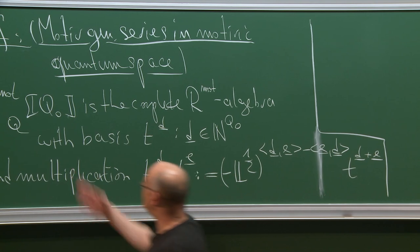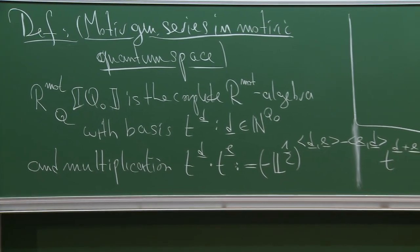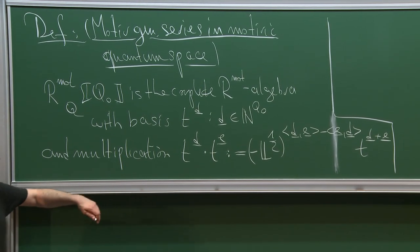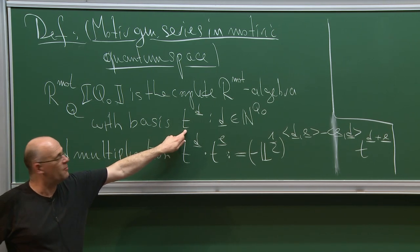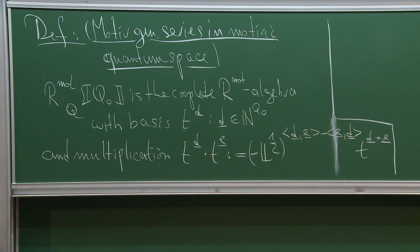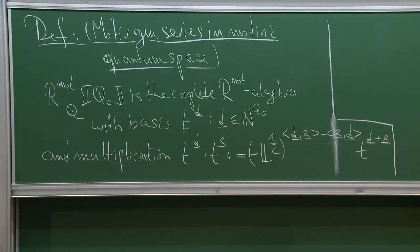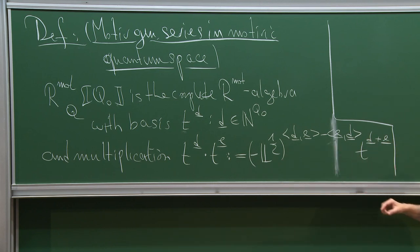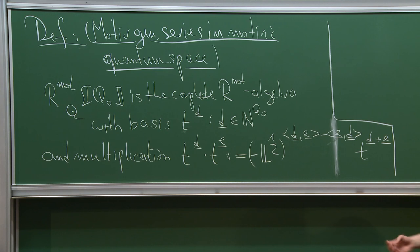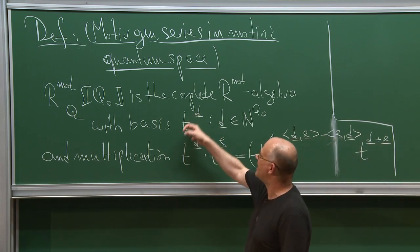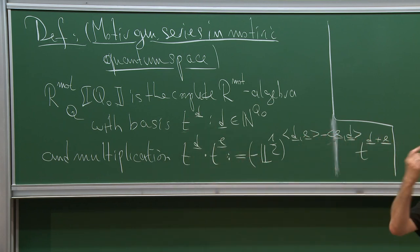It's formal power series in as many variables as we have vertices in the quiver. Instead of writing t_i^{d_i} as a product over all i, we formally work with monomials t^d as shorthand. It's the anti-symmetrized Euler form used as multiplication — associative and unital, with unit t^0, and complete with respect to the augmentation ideal generated by t^d for d nonzero. We have formal power series, and this ring is complete with respect to this ideal.